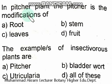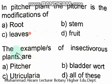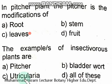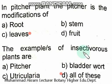In the pitcher plant, the pitcher is the modification of leaves. Examples of insectivorous plants include pitcher plant, bladderwort, and Utricularia. The right option is option D — all of these are insectivorous plants.